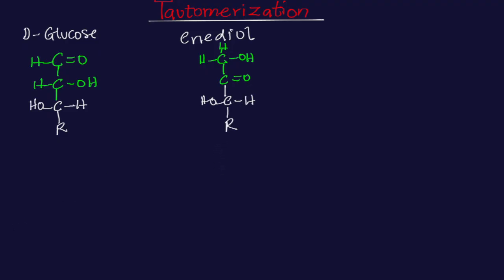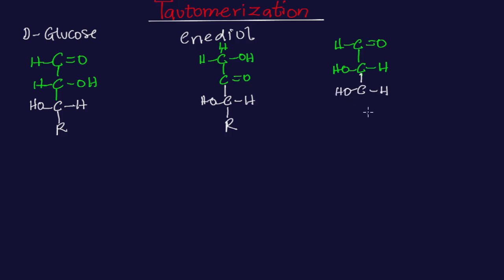Then let me move to the last one, which is mannose. In the case of mannose, I'm going to have no bond at the top, I'm going to have hydrogen here, but on carbon number 2, I'm going to have my OH on this side. Because don't forget that mannose and glucose almost have the same structure, but they have different arrangements of atoms on carbon number 2 — that is, the way the hydroxyl group is arranged on carbon number 2 is different. So mannose and glucose are epimers of each other on carbon number 2.